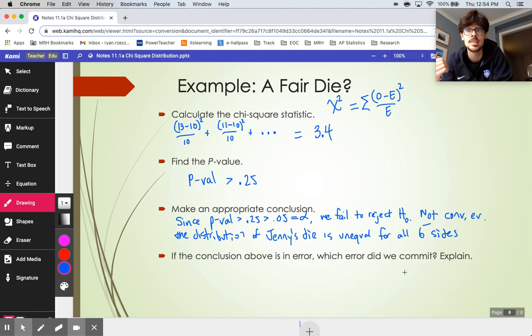So we're going to end up failing to reject H0, meaning there's not convincing evidence that Jenny's die is messed up. There's not convincing evidence the distribution of outcomes on Jenny's die is unequal for all six sides. And for this problem here, if we did make an error, we failed to reject. That means we could be making a type 2 error. Next video, we're going to clean up chi-square goodness of fit a little more. And I'm going to show you how you can use your calculator to do some calculations.